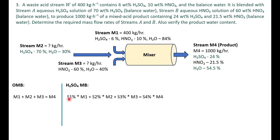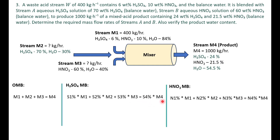For the sulfuric acid solute balance, we multiply each stream's mass by its respective sulfuric acid weight fraction. Stream m1 has 6 percent, stream m2 has 70 percent, and stream m3 has zero percent sulfuric acid. Similarly, for the nitric acid balance, we multiply each stream mass by its respective nitric acid weight fraction.